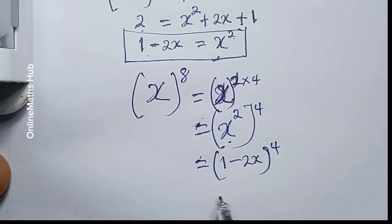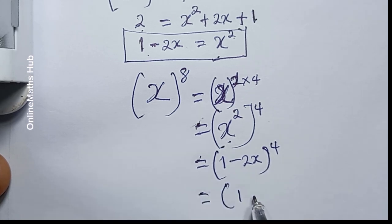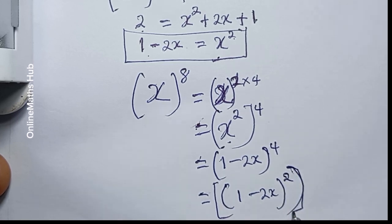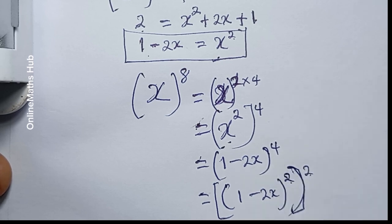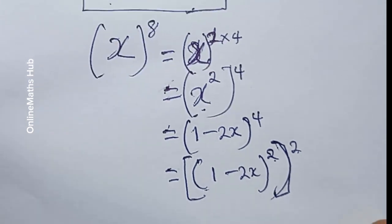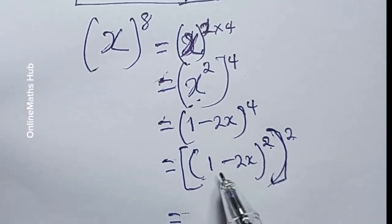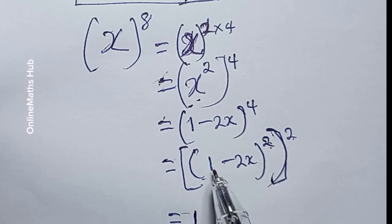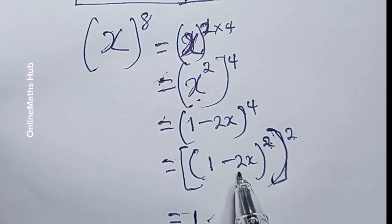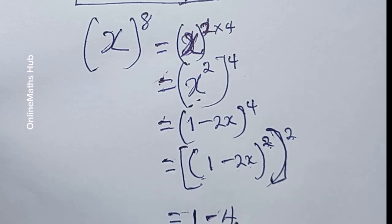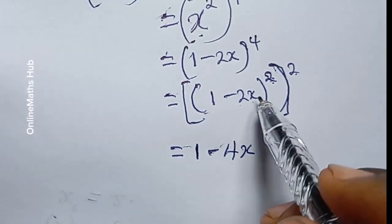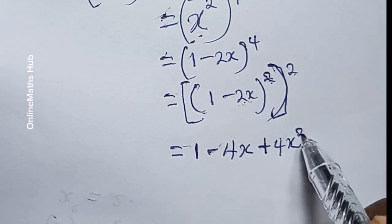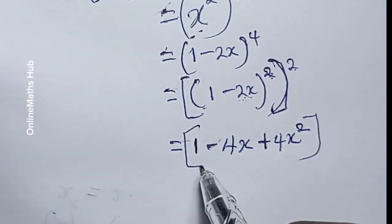Next, I'll split the power 4, writing this as (1 minus 2x) all raised to power 2, and then that whole thing raised to another power 2 — since 2 times 2 gives 4. Expanding the inner bracket: 1 times 1 is 1, then 2 times 1 times minus 2x gives minus 4x, and minus 2x times minus 2x gives plus 4x squared. All of this is still raised to power 2.